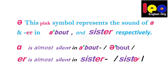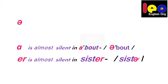In the same way, in 'sister' — S-I-S-T-E-R — that E-R is not stressed. Say 'sister,' not 'sister.' The ending E-R is almost silent. So in English, where spellings must be pronounced very lightly, this particular symbol is used. This is A.